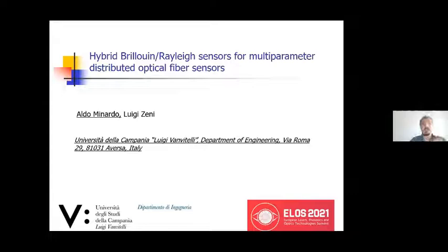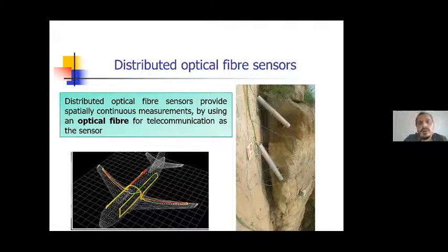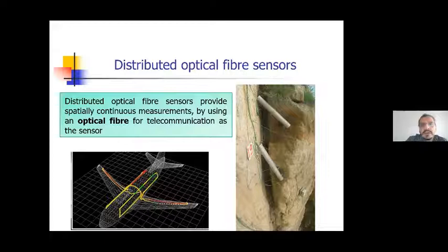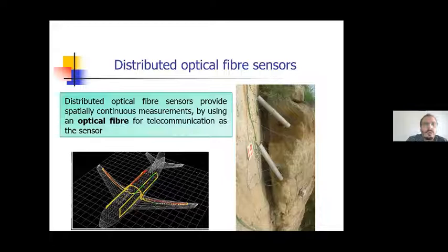In my presentation I will talk about a new scheme for hybrid distributed optical fiber sensors based on Brillouin and Rayleigh scattering. First of all, a few words about distributed optical fiber sensors. These sensors employ common optical fiber for telecommunication as sensors, so we can determine the quantity of interest, for example the temperature or the strain, all along the fiber with a spatial resolution that depends on the interrogation unit we employ for the measurements.